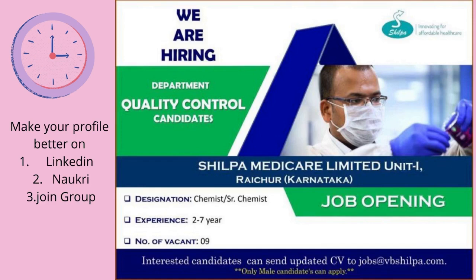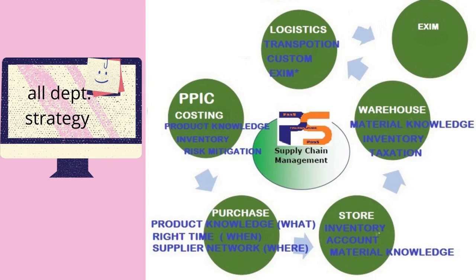These are the main basic departments of supply chain. Now let's describe the main role of all departments. First of all, PPIC gives you an indent — indent means they must have knowledge about finished goods orders. In PPIC you must know about costing, BMR, inventory, and risk management.